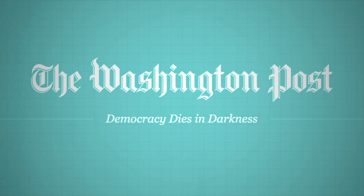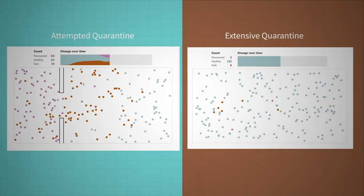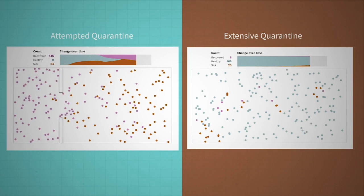Another strategy we can take to improve our understanding of exponential growth is to build and inspect simulations. Early on in the pandemic, the Washington Post built a great simulation showing how infections are transmitted and showing that quarantining a country is an ineffective way of stopping an infection, but imposing social distancing is a very effective way of slowing down its progression.